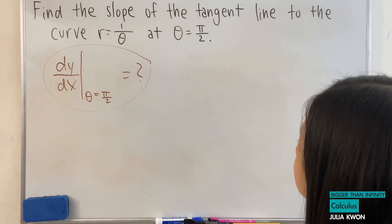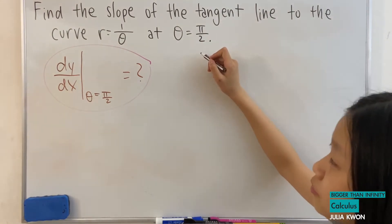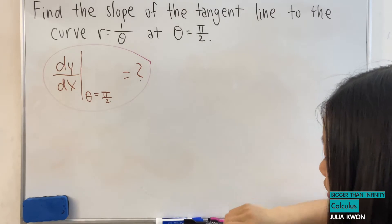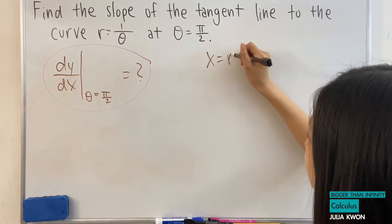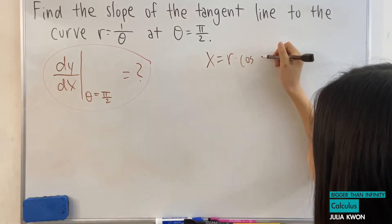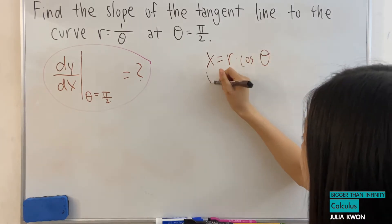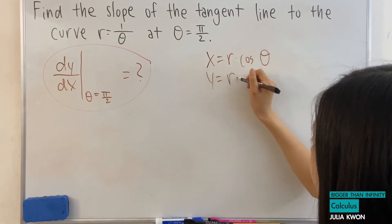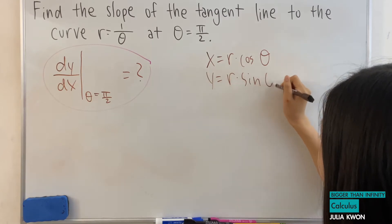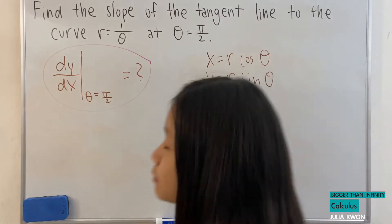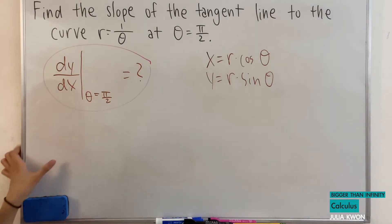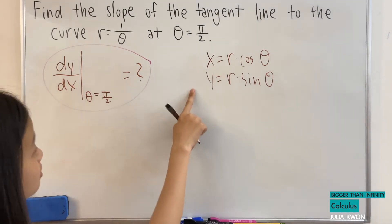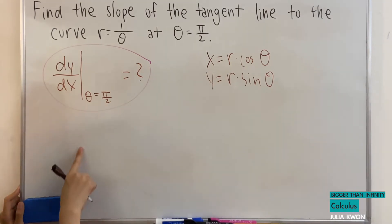Well, first, if you're already familiar with polar equations, you should know that x is equal to r multiplied by cosine theta, and y is equal to r times sine theta. I have this memorized from long use, but if you're new to these two, here's a way to memorize it.